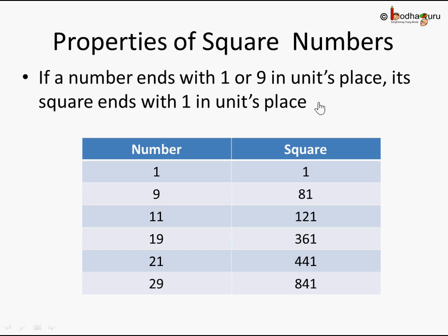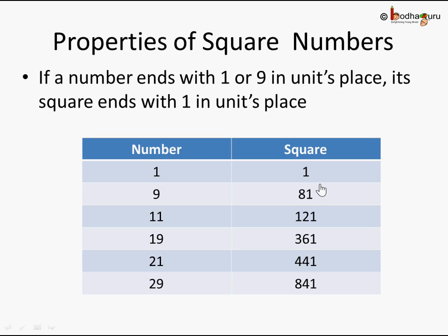Let's look at another property. If a number ends with 1 or 9 in the units place — for example numbers like 1, 9, 11, 19, 21, 29, 31, 39, 441, 449 — then its square always ends with 1. You can see that 11 into 11 is 121, and 19 into 19 is 361, so the squares are all ending with 1.